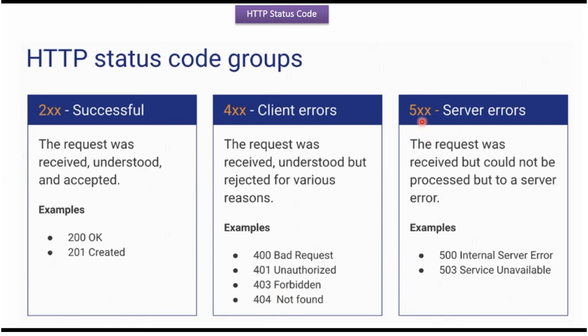The third group is the 500 series status code, which means server errors. The client sent a request to the server; the request was received, but the server could not process the request because of a server error. Examples are 500 meaning internal server error and 503 meaning service unavailable.